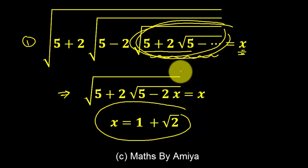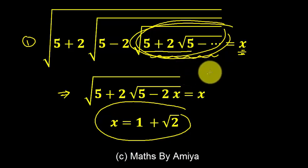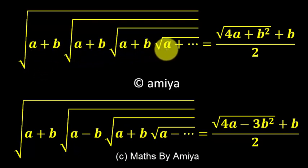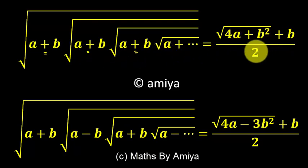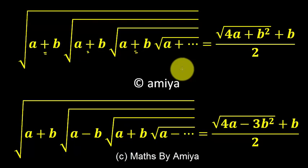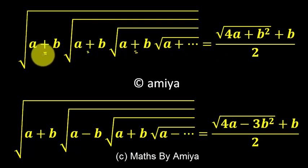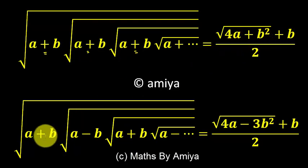There is no need to do all these calculations. This is my first learning concept video where I'm saying: please memorize a formula. The formula for this type of question — if you have a, b, a, b, a, b infinite nested roots and all signs are the same — is under root of (4a plus b) all squared plus b, divided by 2. If you have alternate signs, the formula is under root of (4a minus 3b) all squared plus b, divided by 2.